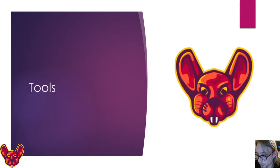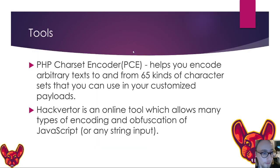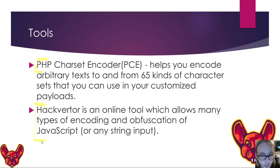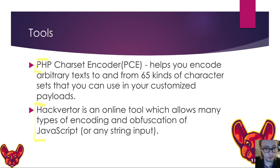It's very important to know about what tools you can use — you can do this manually, but there are tools that can help quite a lot. The first is PHP Charset Encoder, which helps you encode arbitrary text to and from 65 kinds of character encodings — you enter your text and it can convert to a char array, JSONify, and many different things. Hackverter is an online tool that allows many types of encoding and obfuscation of JavaScript. It might be useful to have all of these encoding options in one place, and Hackverter can do that.